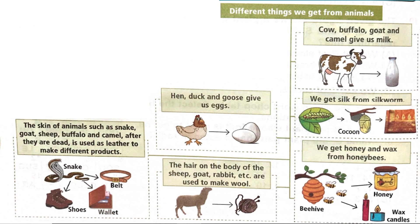Let's talk about different things we get from animals. The first one is milk, which we get from cow, buffalo, goat, and camel. Next, we get silk from silkworm — you can see the cocoon form, and then we get the silk from there. Next, we get honey and wax from honeybees.